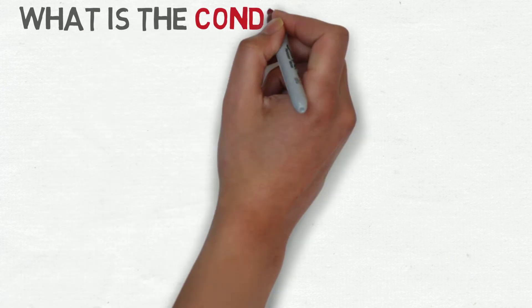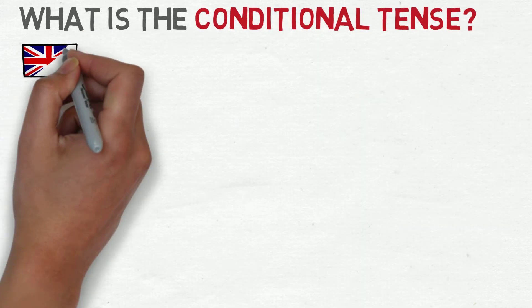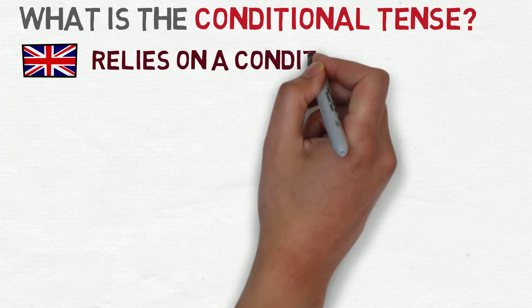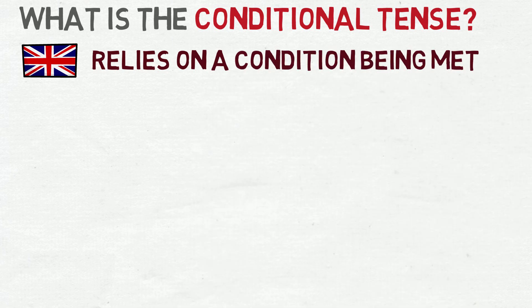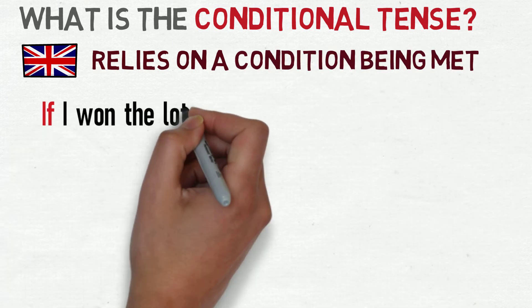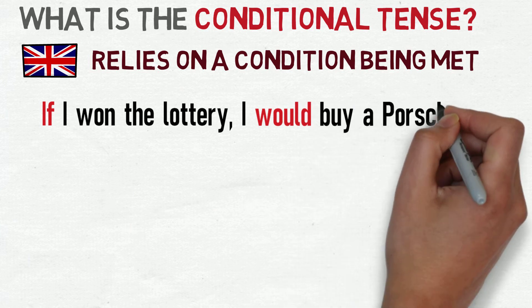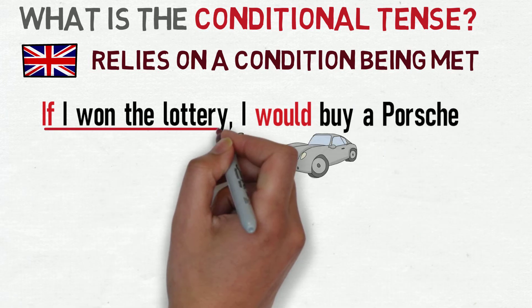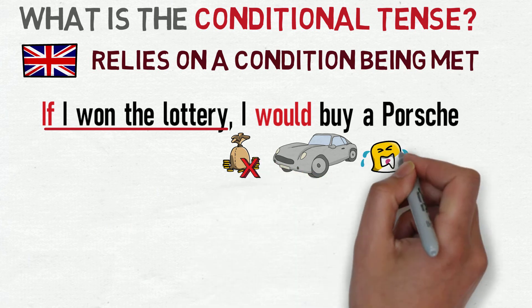To understand this lesson, it's important that you understand what the conditional tense is. The conditional tense is called this because it relies on a condition being met. For example, if I won the lottery, I would buy a Porsche. This is reliant on the condition of winning the lottery. Without that money, I can't buy the Porsche.